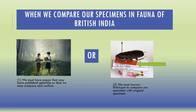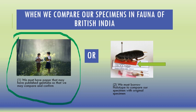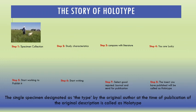When we compare our specimens using the Fauna of British India, two things are very important: number one, we must have a paper that has published genitalia so that we may compare and confirm our specimen; or we may borrow the holotype to compare our specimen with the original specimen.